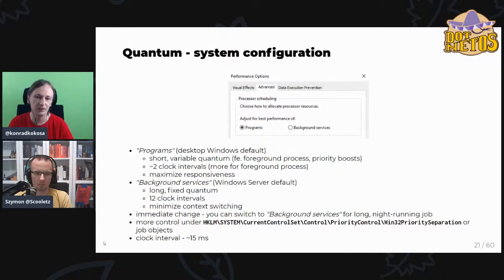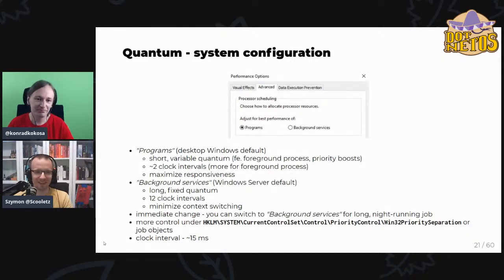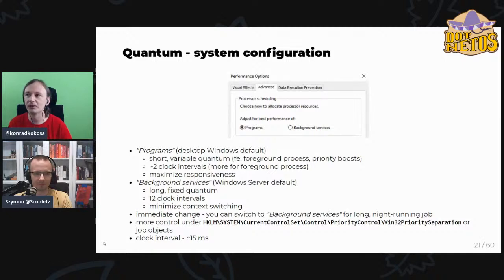It's quite surprising that you can control this, and the change takes effect immediately. You can even change it now during the webinar. If you measure an application doing processing, you would likely see a difference. You can measure it with BenchmarkDotNet, for example. You can also use the registry to change it even more granularly.